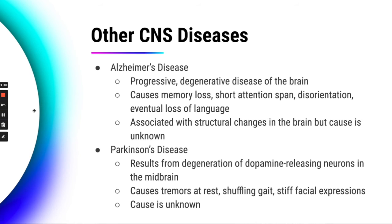Parkinson's disease comes from neurons in the midbrain that release dopamine — a neurotransmitter sometimes called the 'feel good' neurotransmitter because it has a role in pleasure responses. In Parkinson's, the neurons that are supposed to release dopamine degenerate, causing a person to have tremors, a shuffling gait when walking, and stiff facial expressions. The cause of Parkinson's is also unknown and there is no cure for it either.